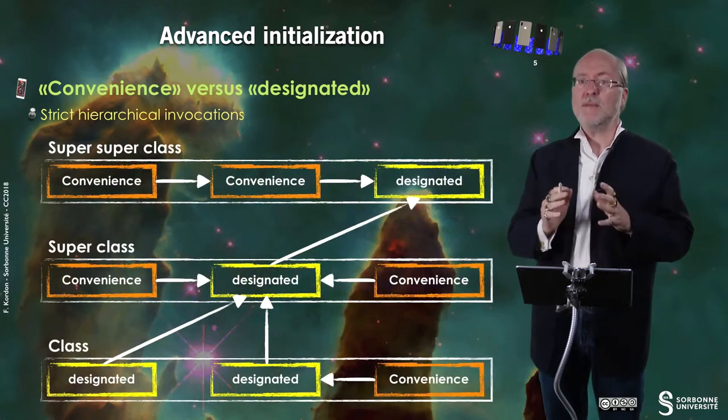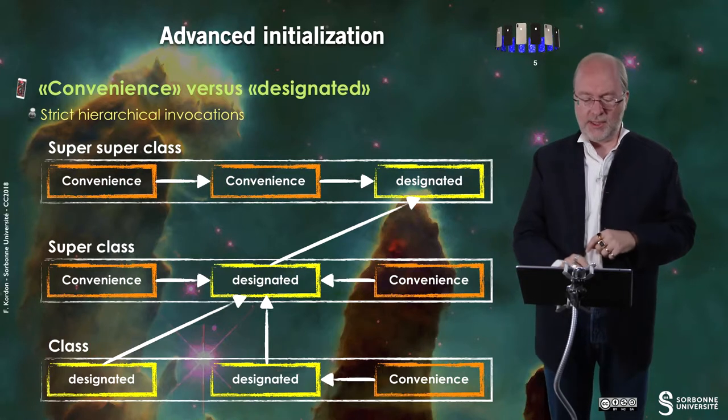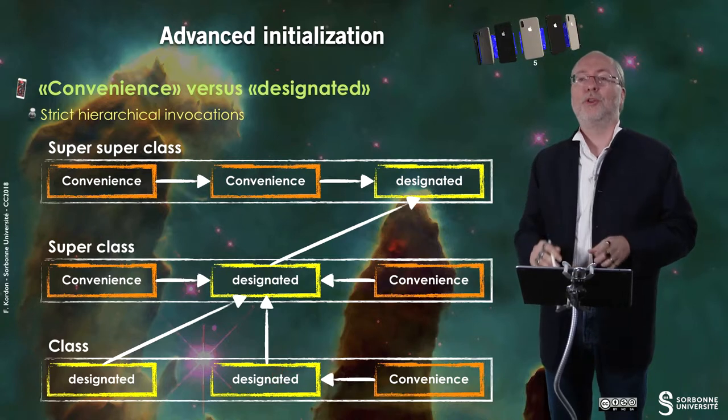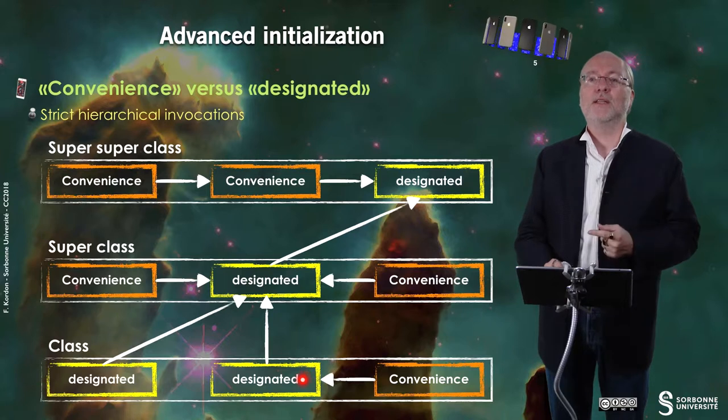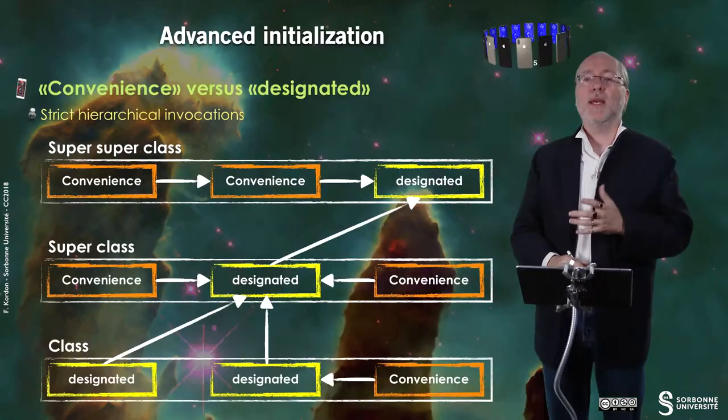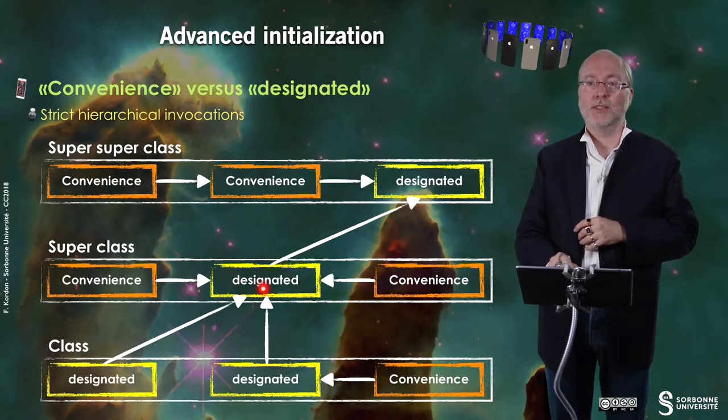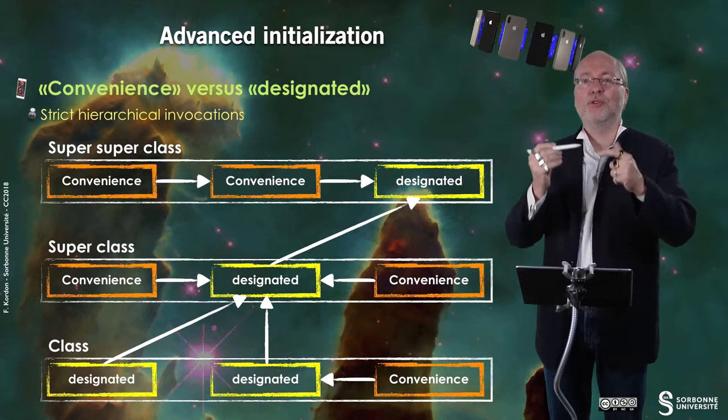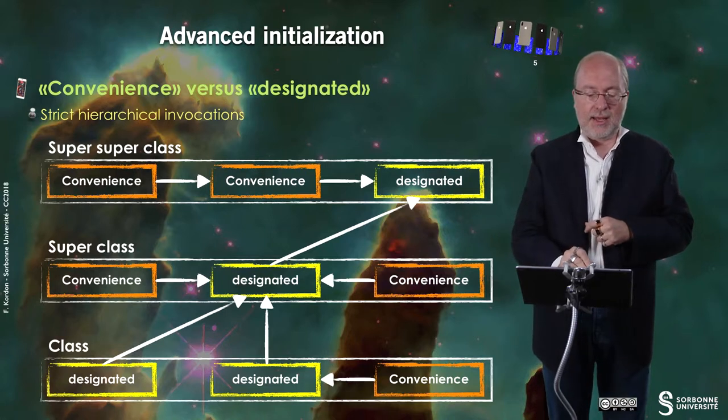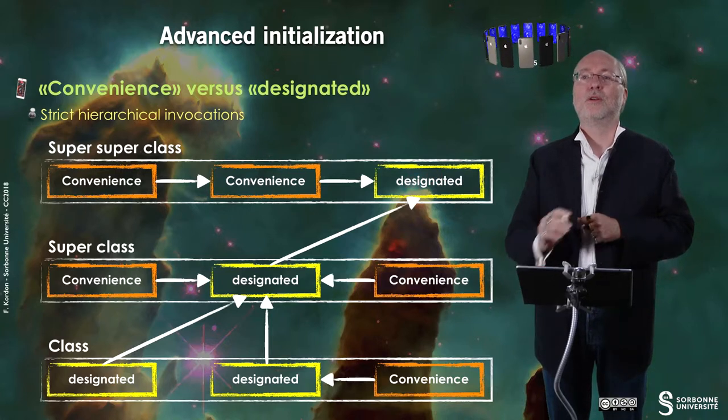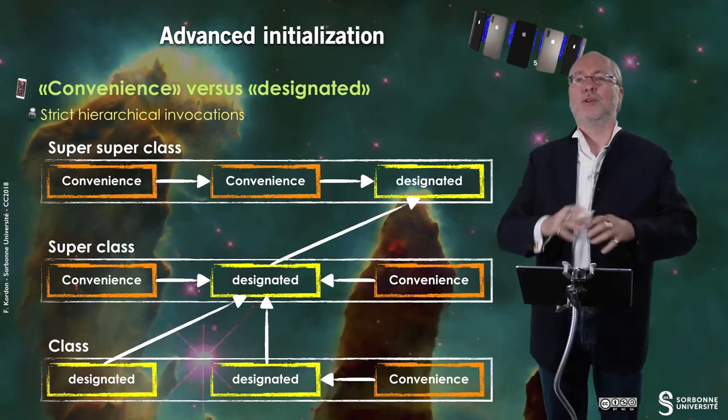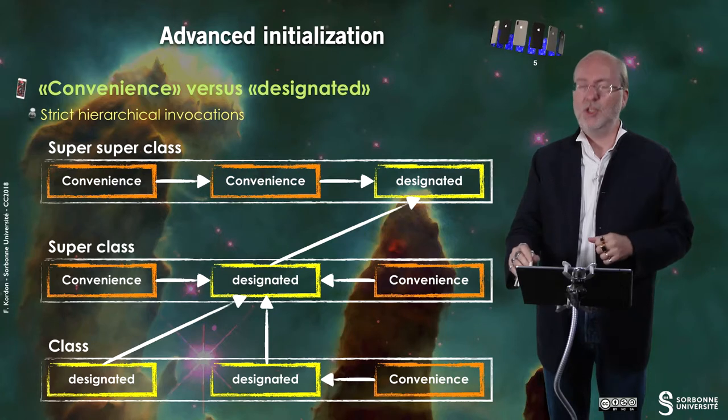So let's have a look. And let's imagine that I have here a class. This class has two designated initializers. And this designated initializer can call the initializer of the superclass. And there is a convenience initializer here that must invoke a designated initializer of the same class that will himself invoke the designated initializer of the superclass. Here, in a superclass, I have just one designated initializer and two convenience initializers that make a reference to it. And in the super superclass, I can have a convenience initializer that invokes another convenience initializer that invokes a designated initializer that will invoke the designated or one of the designated initializers of the super super superclass. So these are basically the situations you may encounter when designing initializers for your class.